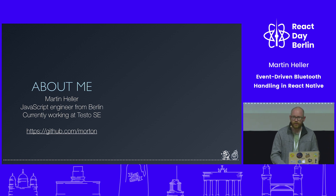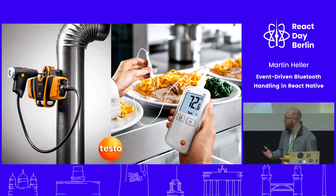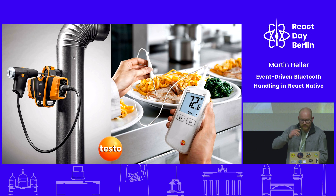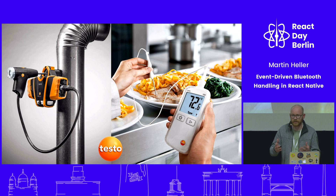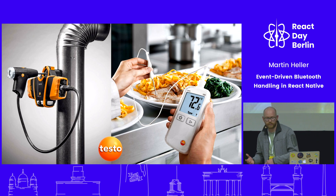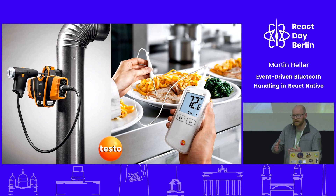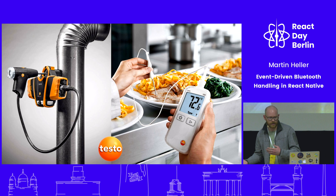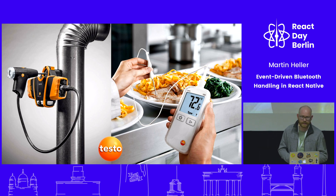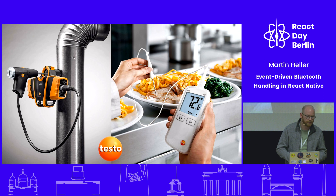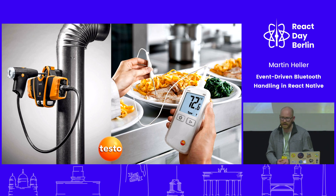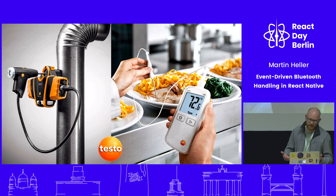I assume most of you won't know Testo, so I'll quickly explain why that's important for this talk. Testo develops these kinds of devices — for example, the one on the left is an exhaust measuring device. You plug that into a chimney of a factory, and it gives you enough data to know if you're within environmental compliance. The other picture is a sensor probe for temperature measurements, often used in food compliance. All of these devices nowadays have Wi-Fi or Bluetooth.